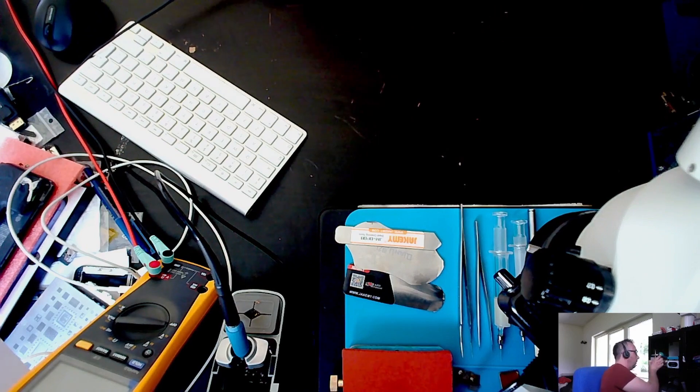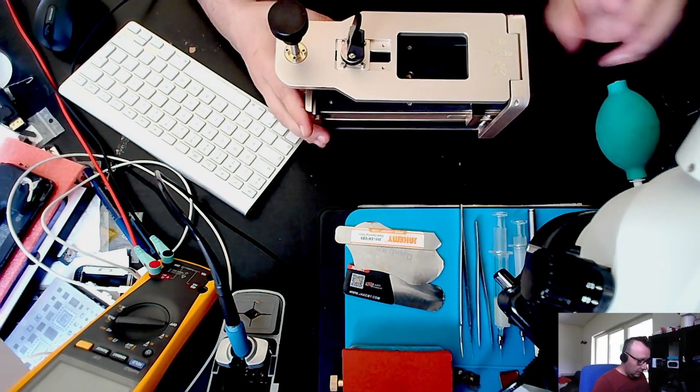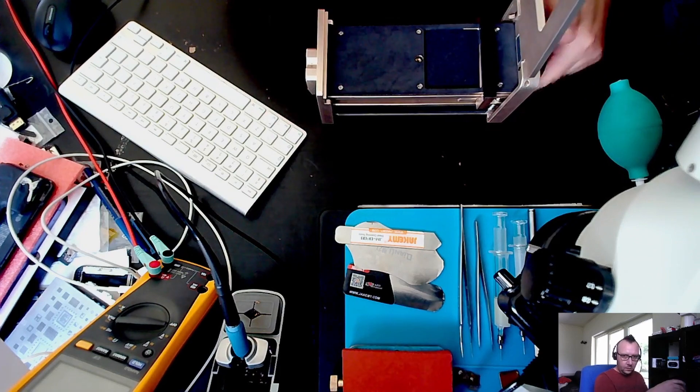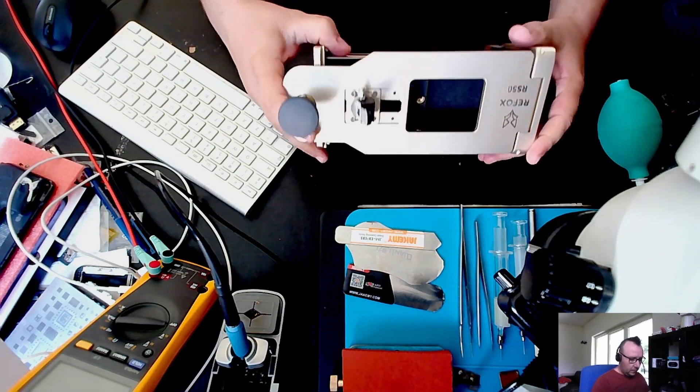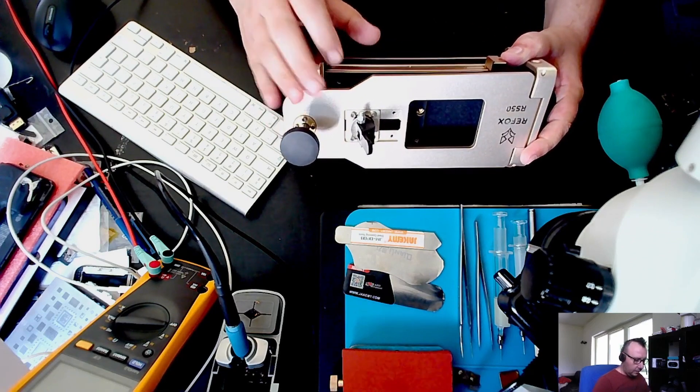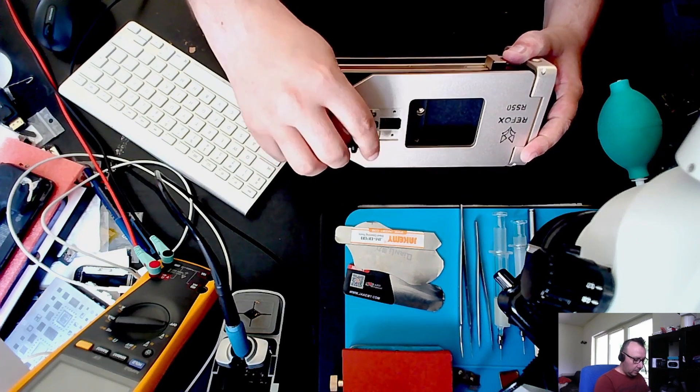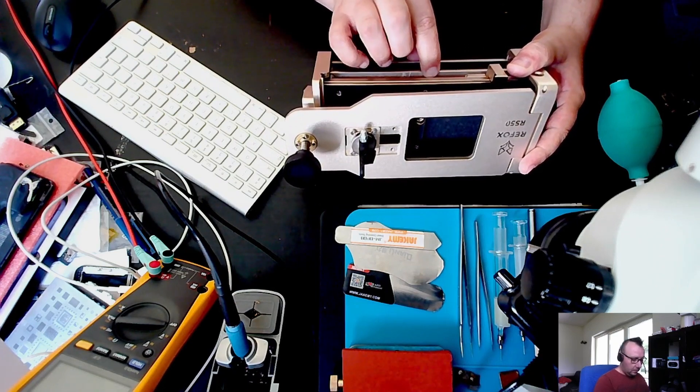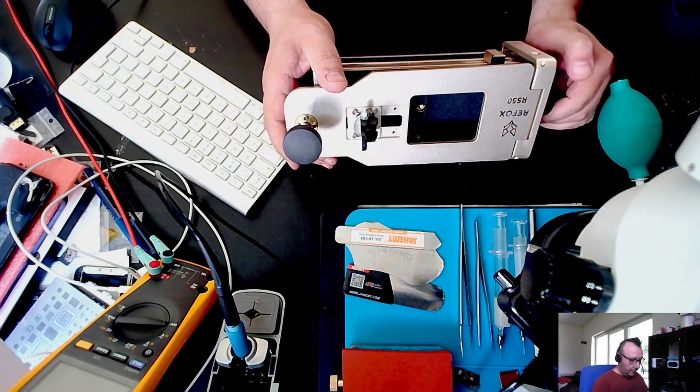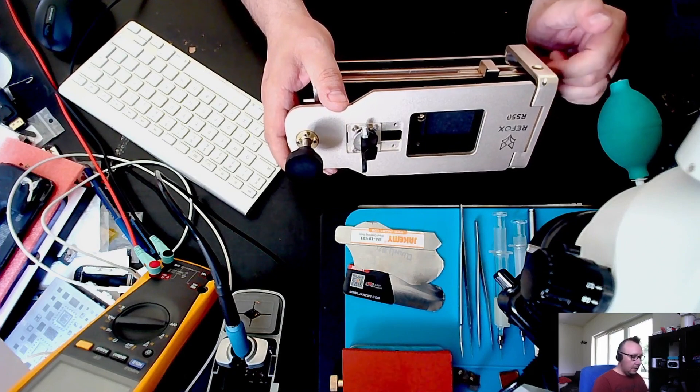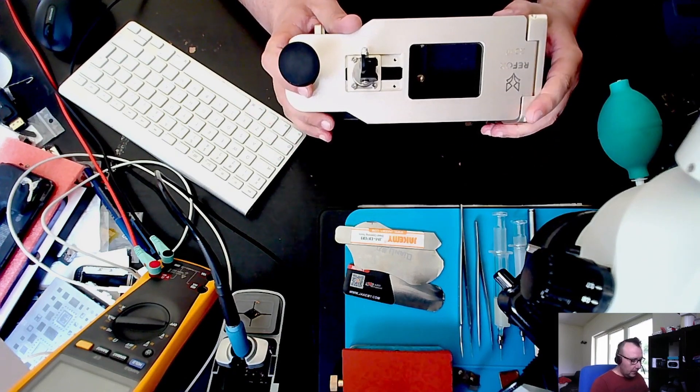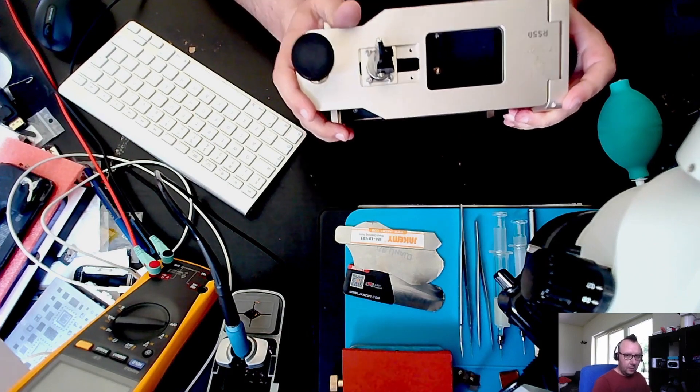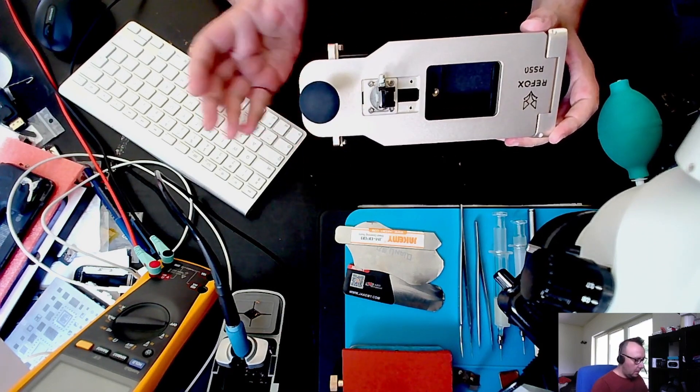And since then, I bought this Refox tool, the RS50. It's an exceptional tool. You can use it for all sorts of phones to open them. You can also use it for pressing down phones with this press when you glue the screen back together, or the back covers for other than iPhones. It's a great tool. It's not expensive, it's about $70.